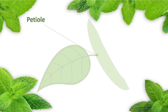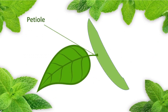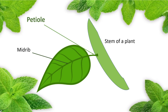2. Petiole — it is the stalk of the leaf by which the leaf is attached to the stem of a plant. The petiole extends into the leaf blade as a midrib and joins the leaf to the stem. Its main function is to keep the leaf in such a position so that it can get maximum sunlight and air. Leaves having a petiole are called petiolate and leaves without a petiole are called sessile.